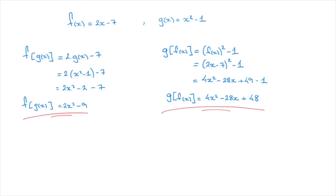This example highlights something quite important. In general, f of g of x will not equal g of f of x. Although it is possible, most of the time they won't be equal. You'll want to make a note of that: in general, f of g of x is not equal to g of f of x.